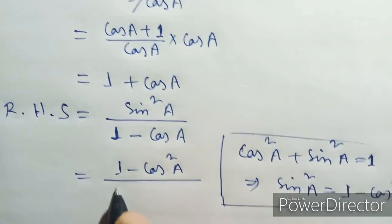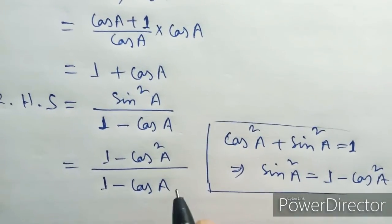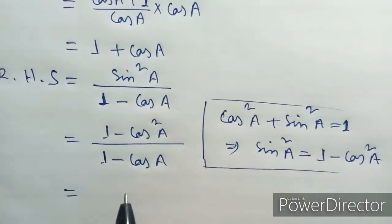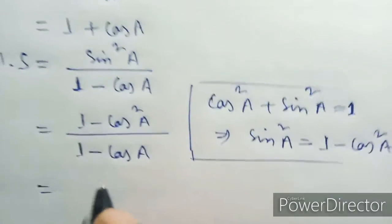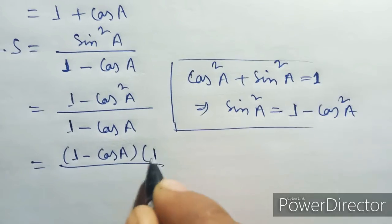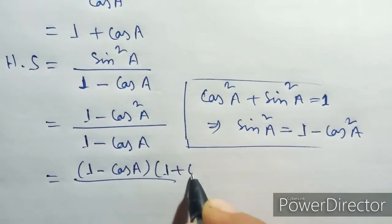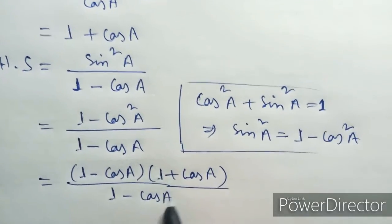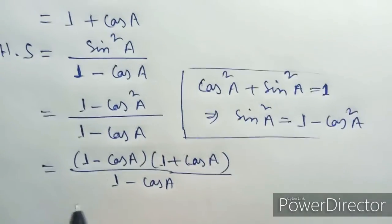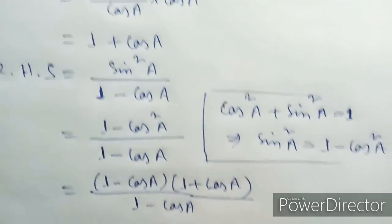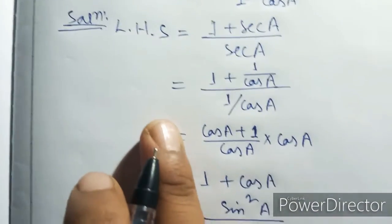...minus cos square a by 1 minus cos square a. Using a square minus b square equals a minus b times a plus b: 1 minus cos, 1 minus cos cancel, then 1 plus cos.